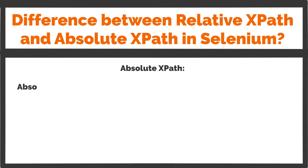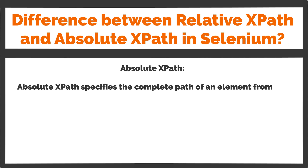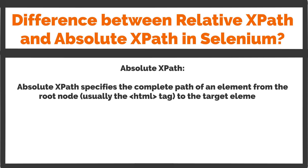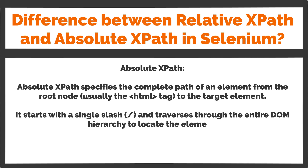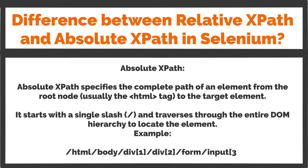Absolute path specifies the complete path of an element from the root node, usually the HTML tag, to the target element. It starts with a single slash and traverses through the entire DOM hierarchy to locate the element. Example: /html/body/div1/div2/form/input3.